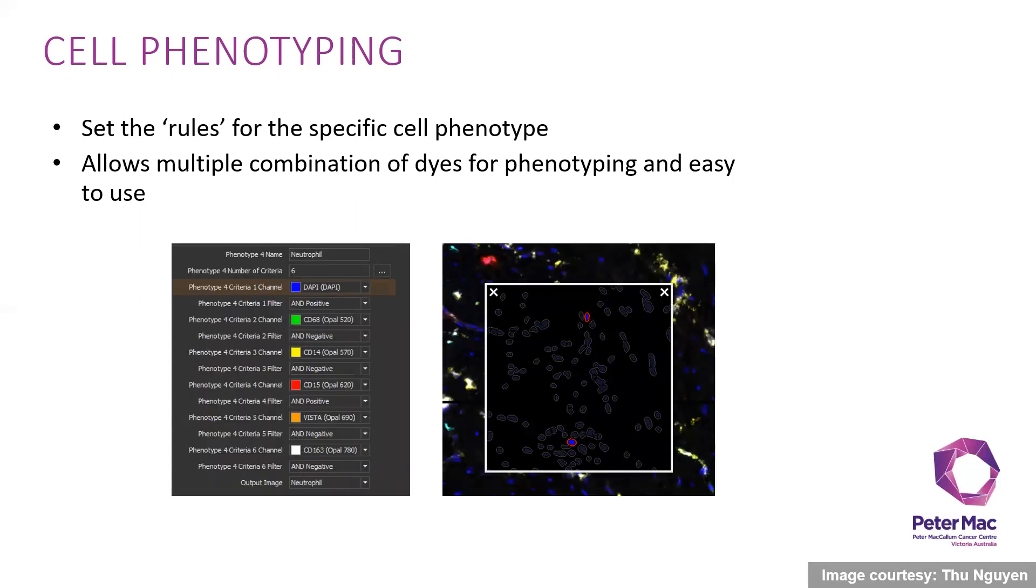For example, this particular phenotyping is using six different criteria from a seven-plex panel. It's using neutrophil for phenotyping of neutrophil and has six different rules here. The right image shows the preview of what it looks like from the cell population here.